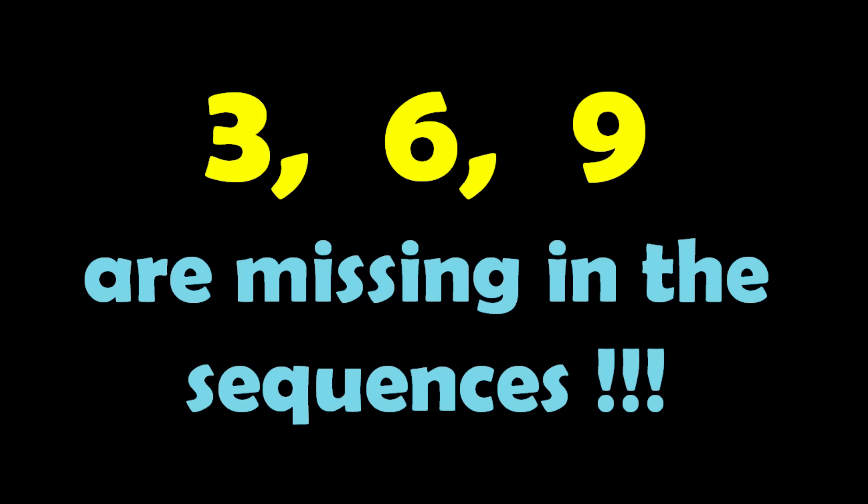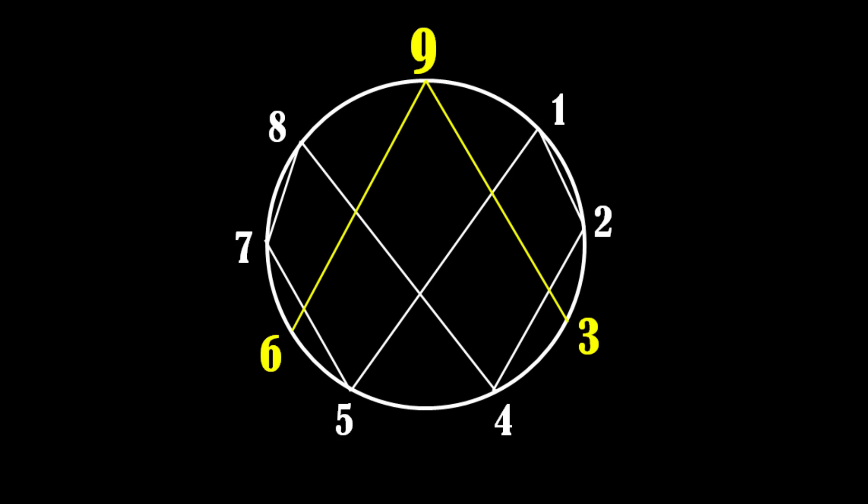Did you notice one amazing thing here? In both the sequences, numbers 3, 6 and 9 are missing every time. In the diagram, these repeating numbers 1, 2, 4, 8, 7 and 5 are shown in white color.